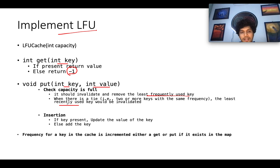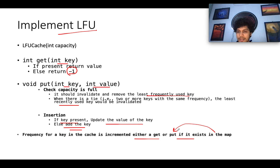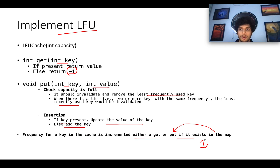The next operation in put is insertion. If the key is already present, you update the value of the key; else you add the key as a new entry. An important aspect: the frequency for a key in the cache is incremented on a get or put operation if that key already exists in the map. If the key doesn't exist, the frequency for that entry would be 1.